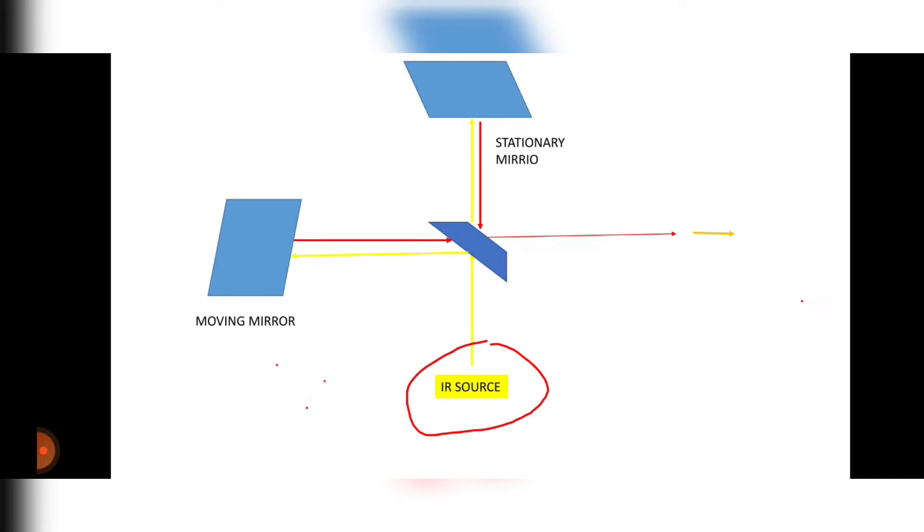After striking this moving mirror and stationary mirror, the light will be reflected back. These red lines are that reflected light, and this reflected light will come together and form a constructive light interference. Constructive means both lights and their intensity will be added and they will form a constructive interference.